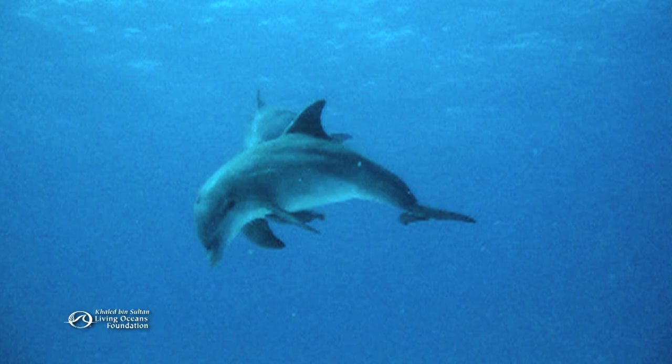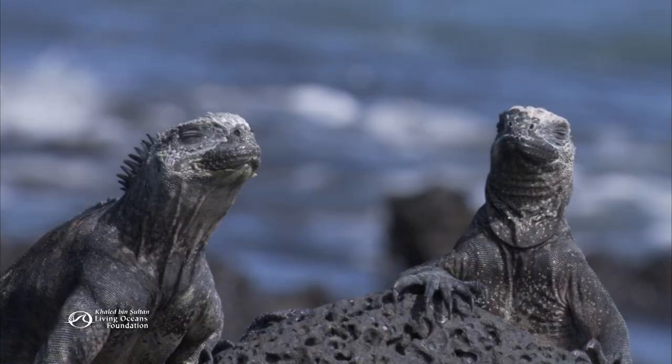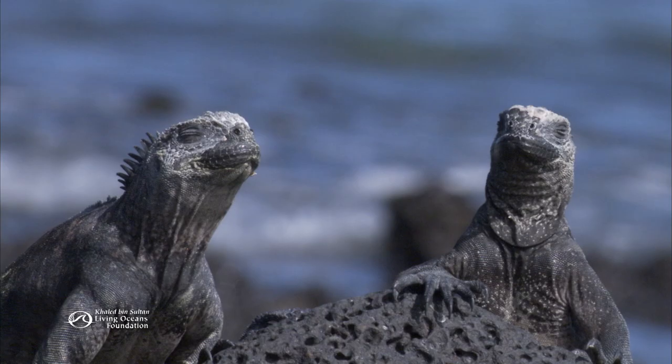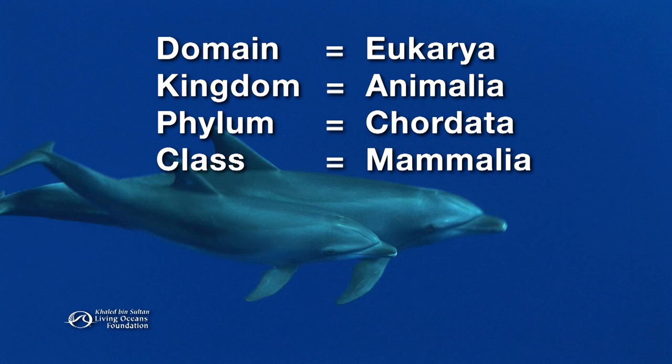It's not cold-blooded like fish and reptiles and it doesn't lay eggs like birds. It belongs with animals that are warm-blooded and produce milk. That's the mammalia, or mammal class.